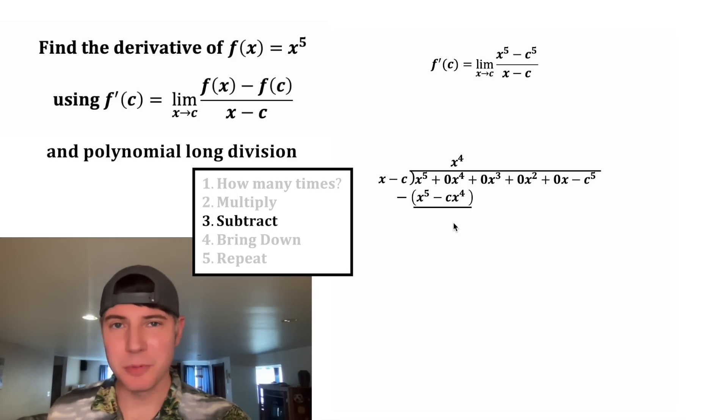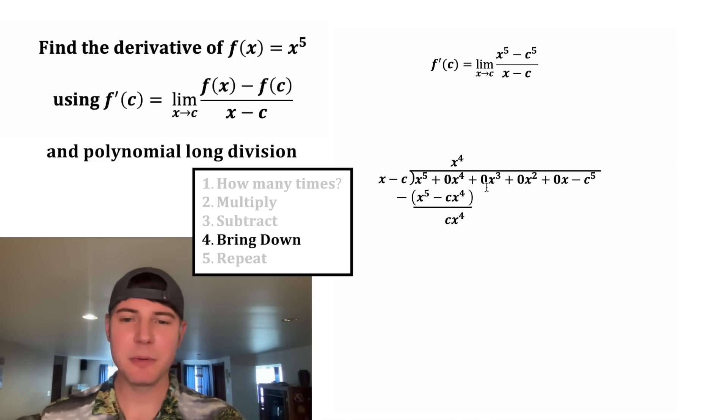And our next step will be to subtract. This x^5 minus x^5 will just give us 0. And then 0x^4 minus negative cx^4 is going to be positive cx^4. And then next we can bring down this plus 0x cubed.